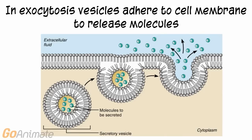In exocytosis, vesicles inside of the cell adhere to the cell membrane and release substances. Neurotransmitters are released this way.